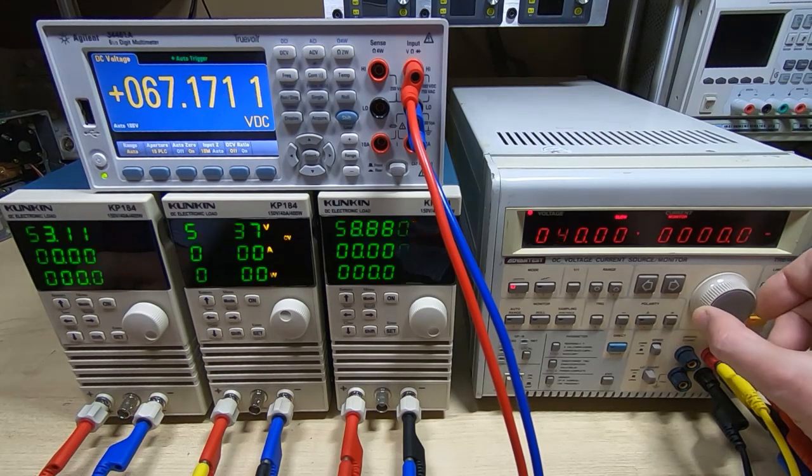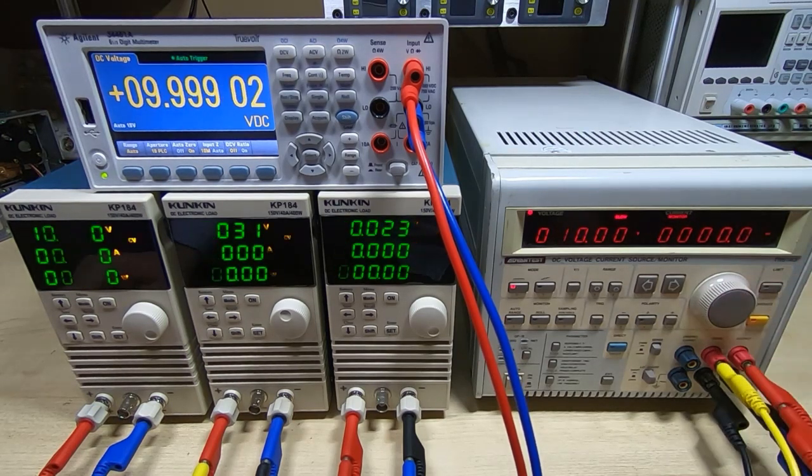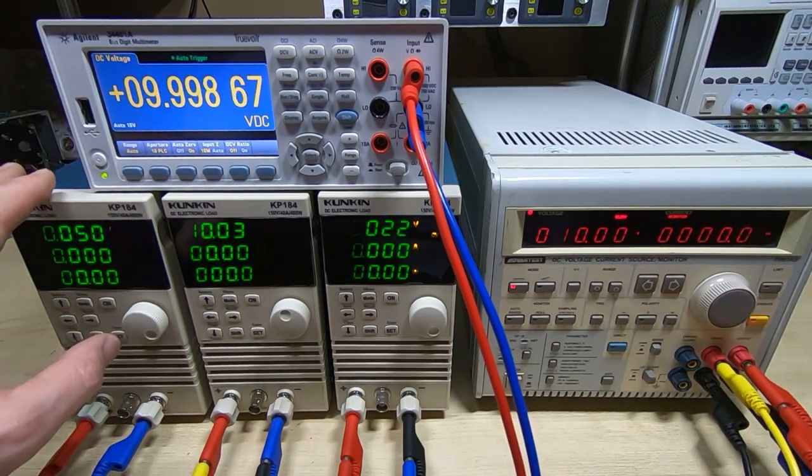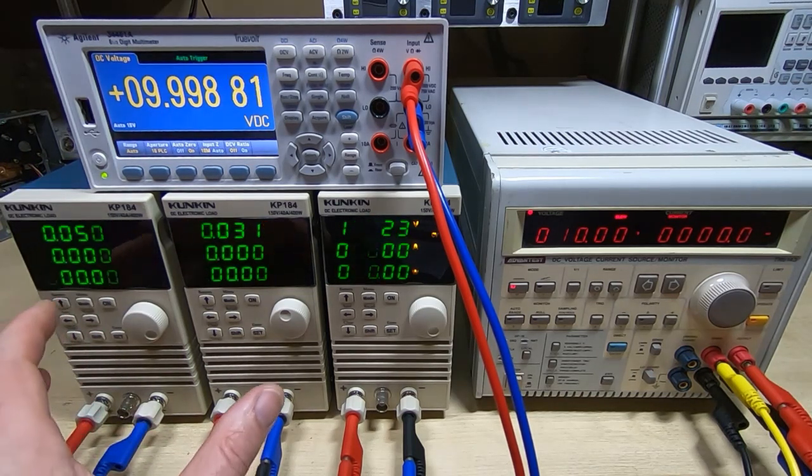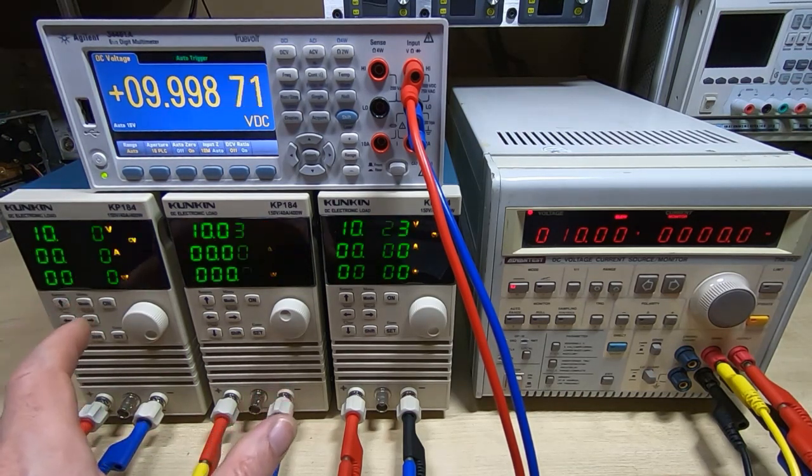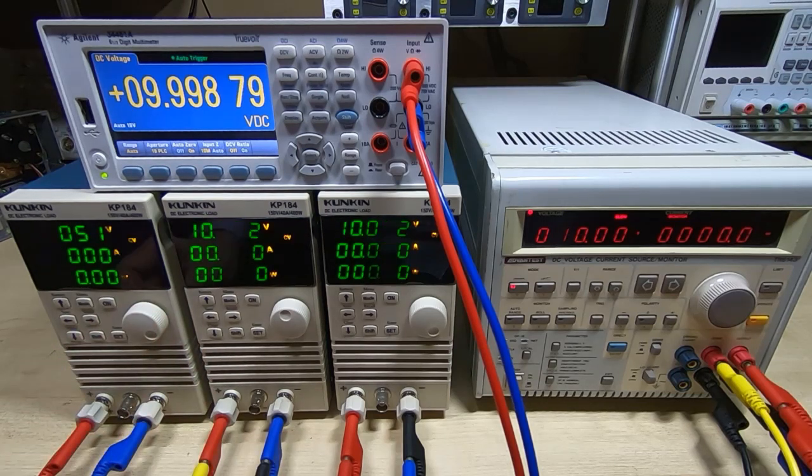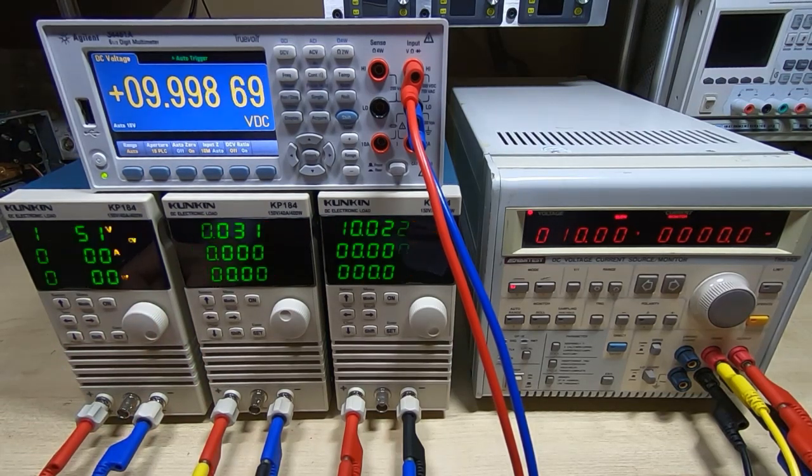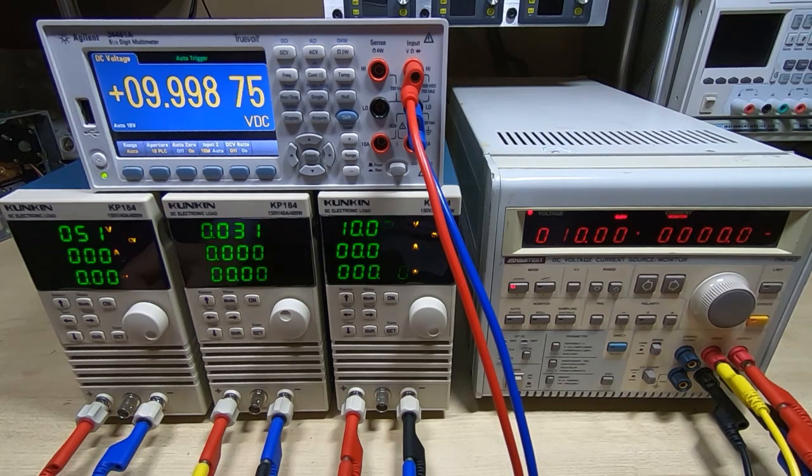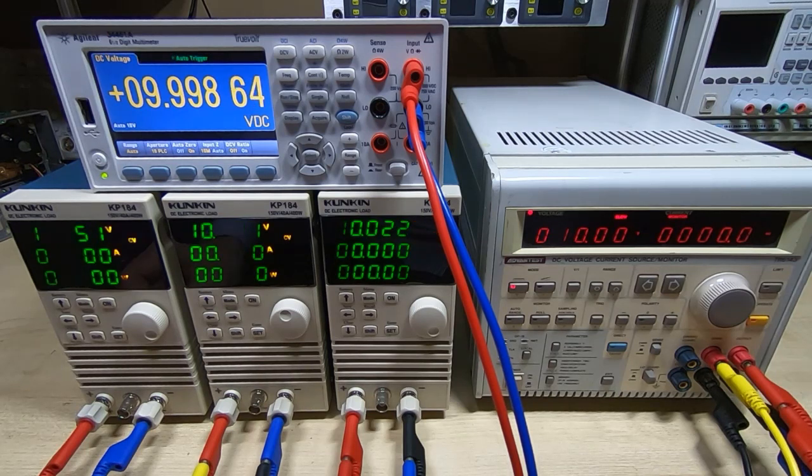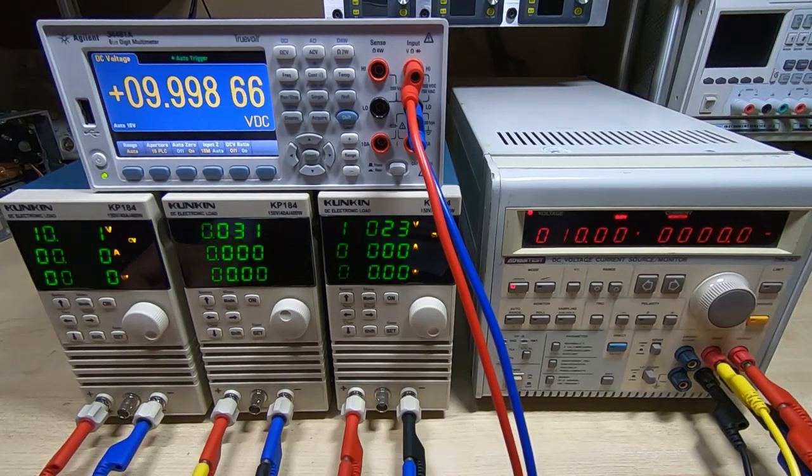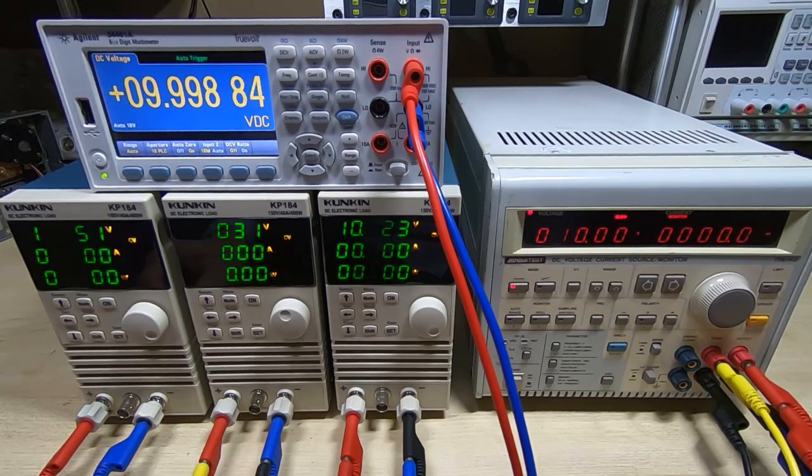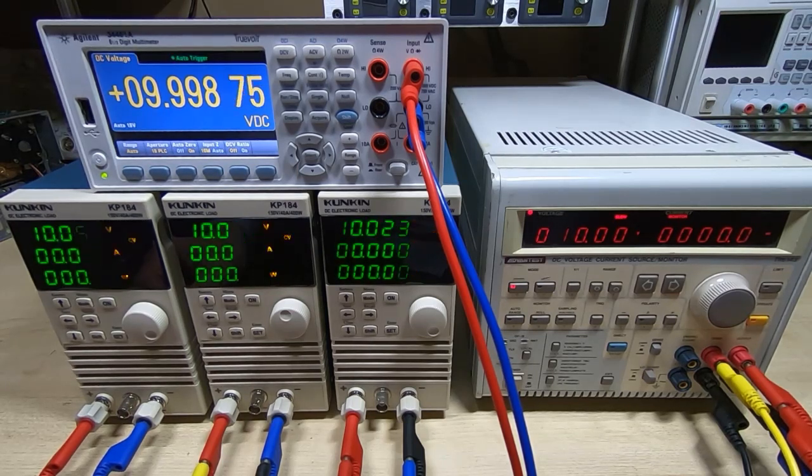So we'll go through the calibration process. Now if you do decide to try this, a word of warning: the Kunkin, the way the calibration works, is it takes two points for each type of calibration, one at the low end and one at the higher end, and then it interpolates all the values between. So it really sets the offset and calibration slope automatically but it's a bit blind in the way it does it.